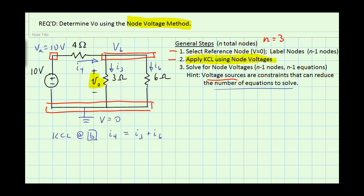So now what we're going to do is write KCL in terms of the node voltages using Ohm's law. So I4 is really the voltage drop across the 4 ohm resistor divided by the 4 ohms. So I4 can really be written as VA minus VB over 4.